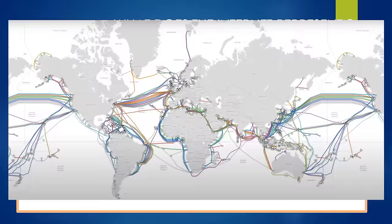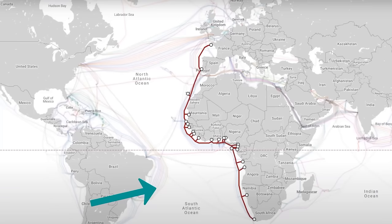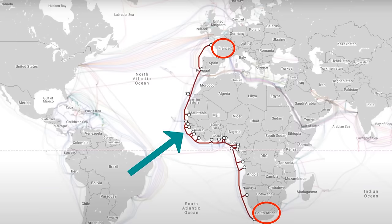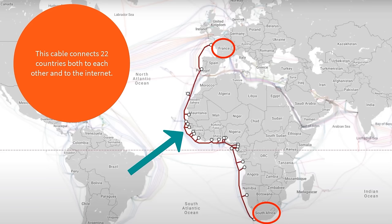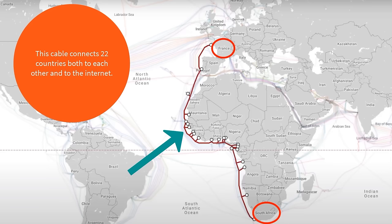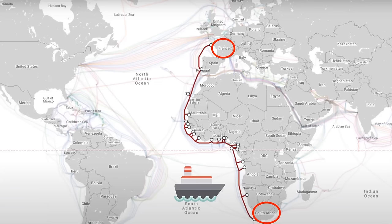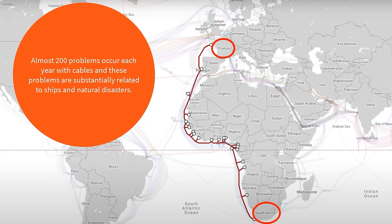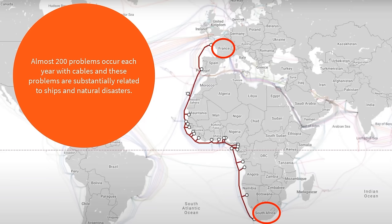Some of these cables are only 131 kilometers long, while others are around 20,000 kilometers long. Breaking one of these cables can cause the internet of a whole continent to go away in a flash. In fact, such an event happened in 2018. There was an almost 17,000 kilometer long cable starting in France and reaching South Africa, connecting 22 countries on the west coast of Europe and Africa. The internet of 10 of these countries crashed when a fishing boat accidentally cut the cable.